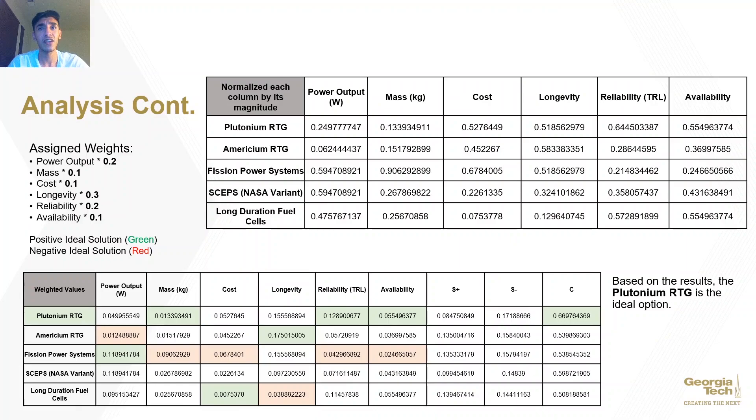Next, the positive ideal solution was identified in green, and the negative ideal solution in red. S-plus and S-minus values indicate the sum of how close and how far each criteria was from the alternative for each ideal solution. Lastly, a closeness ratio indicated by C in the chart below was calculated, and the value closest to 1 is analytically the best alternative, which in this case proved to be the plutonium RTG.